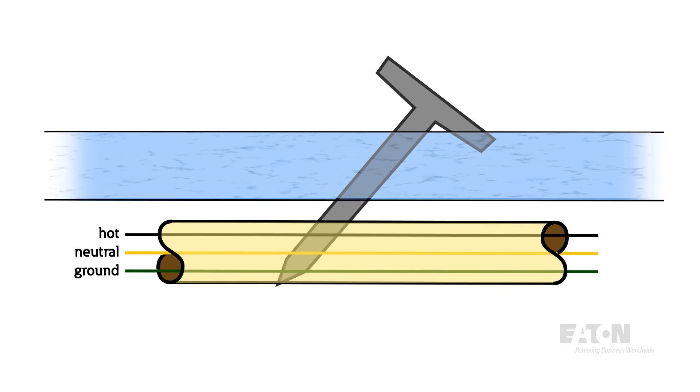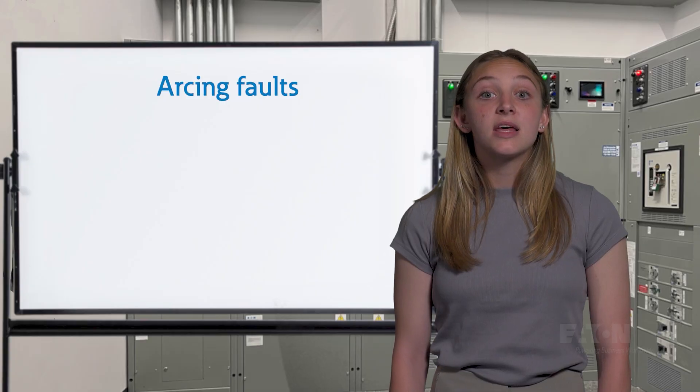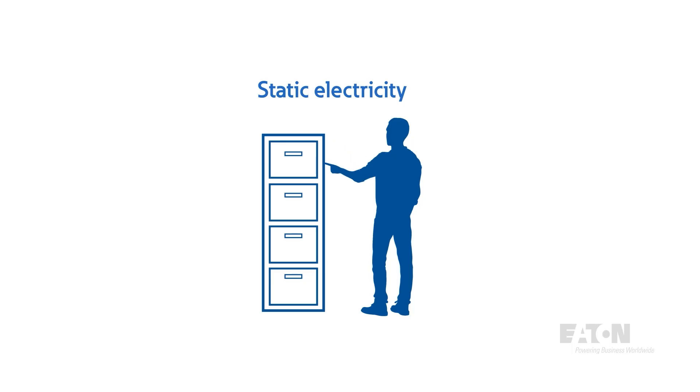With the insulation damaged, the electricity might be able to jump from the energized wire through the metal nail to the neutral or ground conductor. This is a process called arcing that is similar to getting shocked by static, except it keeps jumping until the issue is fixed.